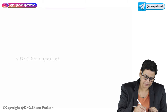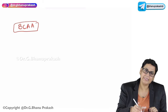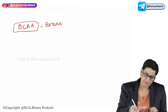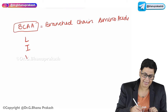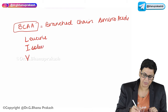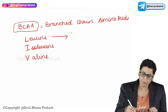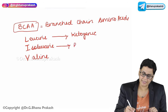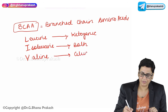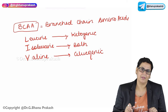Moving on to branched-chain amino acids, or BCAA. The mnemonic to remember branched-chain amino acids is LIV: L stands for leucine, I stands for isoleucine, and V stands for valine. Leucine is a potent ketogenic amino acid, and isoleucine is also ketogenic.